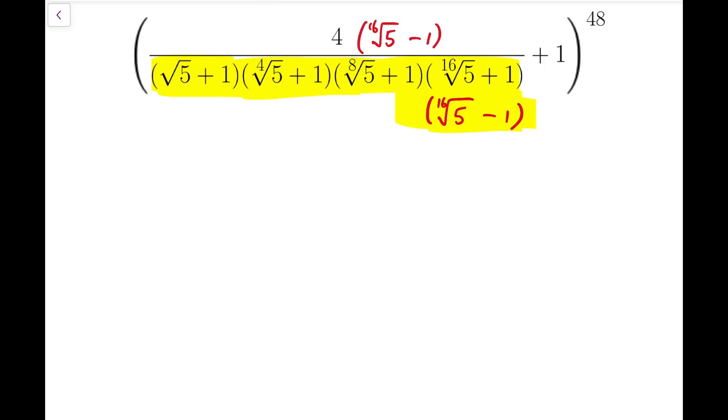of course, I need to multiply the numerator by the 16th root of 5 minus 1 as well, so to make sure that the value is kept to be the same. Now, back to the product of the five expressions, then this will become the 16th root of 5, which is actually x, and then the whole thing to the power 16 minus 1.